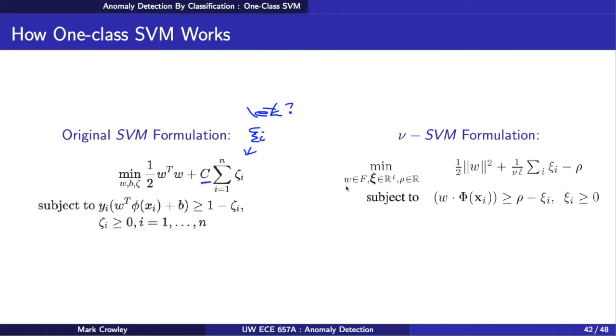In their nu-SVM formulation, which is useful for this One-Class anomaly detection, they replace C with one over nu times L, where L is the number of dimensions and nu is the number of support vectors you're going to have. It's actually a much more intuitive way of thinking of that optimization. You can use this for normal SVM and just say how many support vectors do I want, I want to be anchored onto five points, and you'll set that to five and this will optimize that.